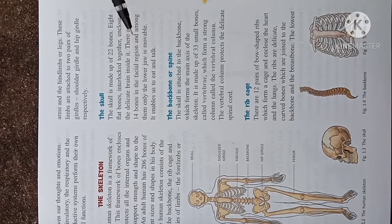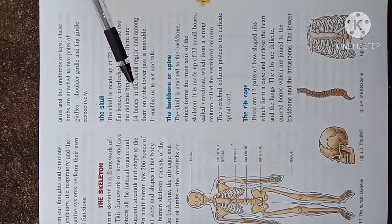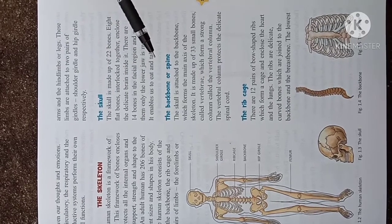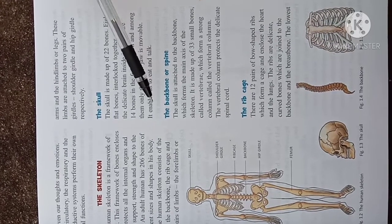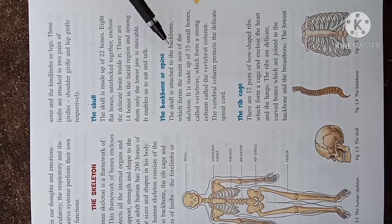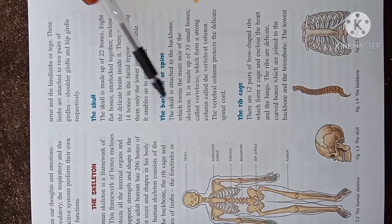Next, the backbone or spine. The skull is attached to the backbone which forms the main axis of the skeleton. So here it is acting as the main backbone that is attached to the skull.